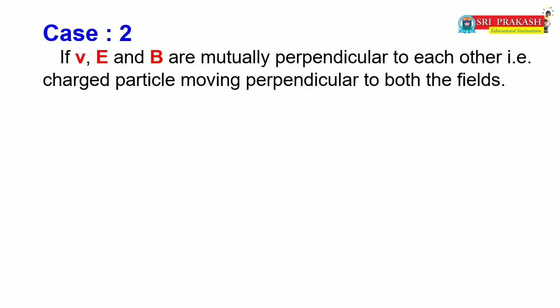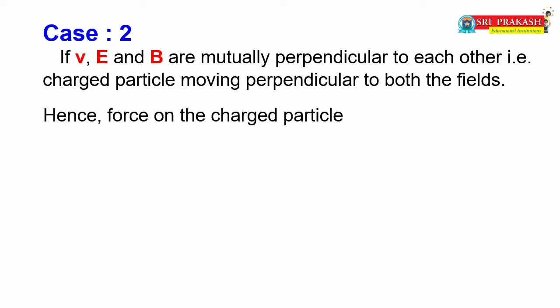Case 2: If velocity, electric field, and magnetic field are mutually perpendicular to each other — that is, the charged particle is moving perpendicular to both fields. Then the force on the charged particle is F = FE + FM as a vector sum, because the electric force and magnetic force on the charged particle may be in the same direction or in opposite directions.